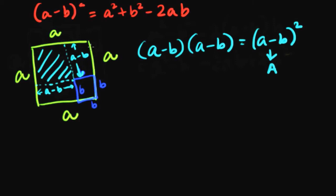So the area of this big square is a square, and if we subtract this area from a square, which is minus b square, we are left with this area.